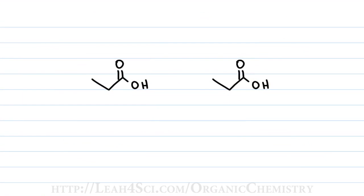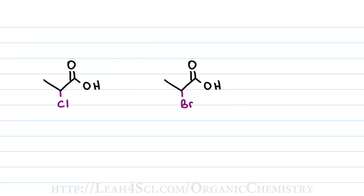When it comes to the inductive effect, you want to look at two different factors. The first one is electronegativity. For example, if I put a bromine on the first molecule and a chlorine on the second molecule, they're both electronegative halogens but since one is more electronegative than the other, the one that's more electronegative is going to have a stronger inductive effect making that acid a stronger acid.